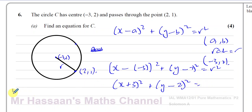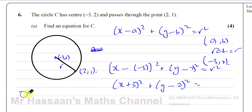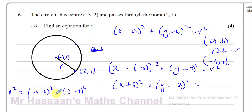Now we've got to find the radius. The radius can be found using the length formula for the two points. r squared equals the change in x, which is minus 3 minus 2 squared, plus the change in y, which is 2 minus 1 squared. That's minus 5 squared, which is 25, plus 1 squared, which is 1. So r squared equals 26.